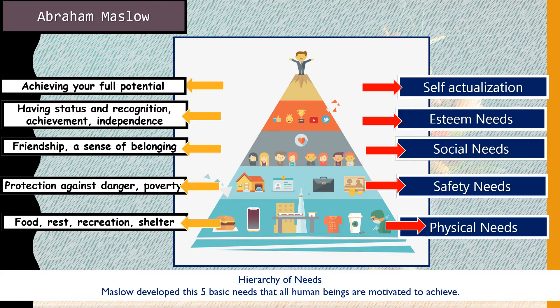At the peak of the pyramid is self-actualization. Having achieved physical, safety, social, and esteem needs, an individual reaches their fullest potential — they know what they're here to do and what they want in life. It's hard to give a single example because self-actualization varies from person to person. According to Maslow, these five needs are the motivators — the reasons why people do the things they do.